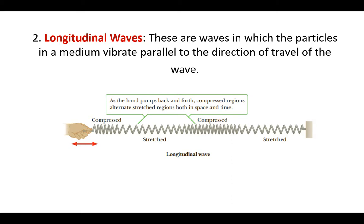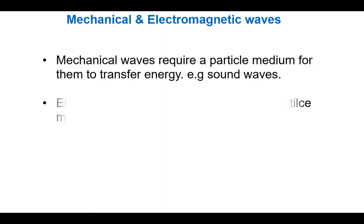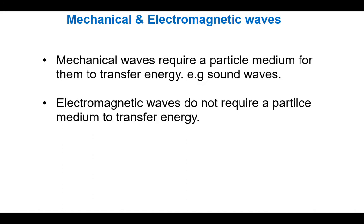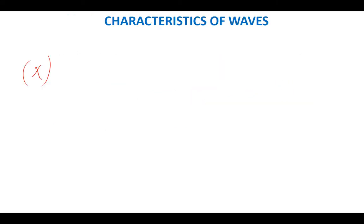Let's look at mechanical and electromagnetic waves. Mechanical waves require a medium for them to be transferred. Sound, for example, cannot be transferred where there is no medium. Electromagnetic waves, on the other hand, do not require a medium or particles to transfer energy from one point to another. Mechanical waves require a particle medium to transfer energy, and the example given here is sound waves.